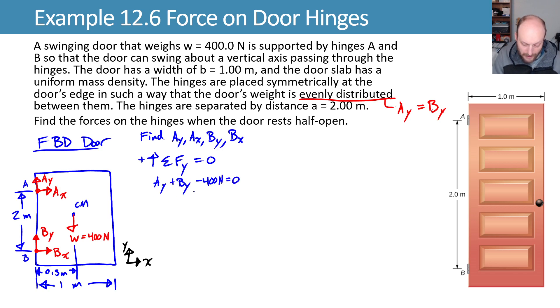We can combine AY and BY because we know they're equal, and say that 2AY is equal to 400 newtons, or dividing by 2, AY is equal to BY is equal to 200 newtons.